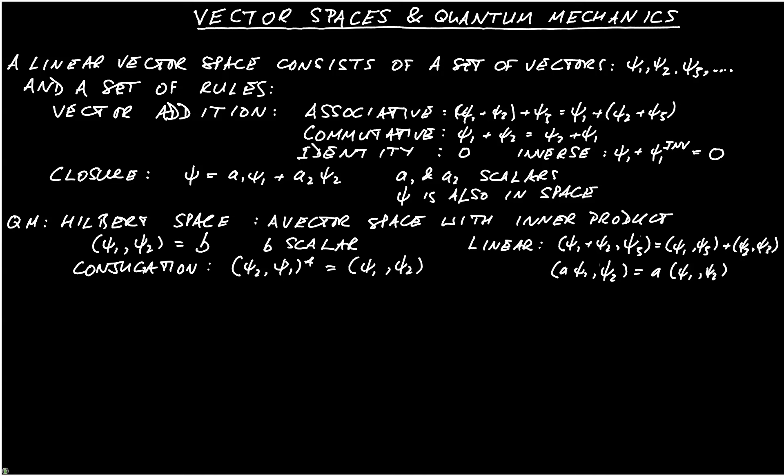The Hilbert space inner product has to be positive definite, which means simply that Psi1 comma Psi1 is greater than or equal to zero. That's just saying that we have a norm. And in mathematical terms, this is known as a normed vector space.